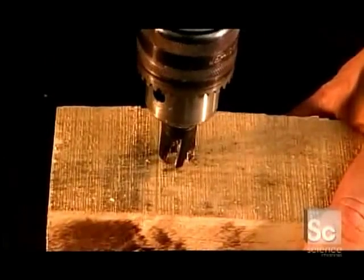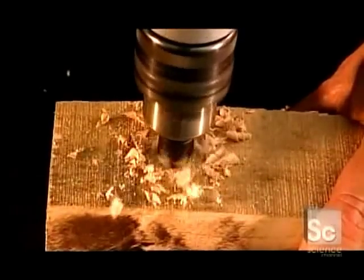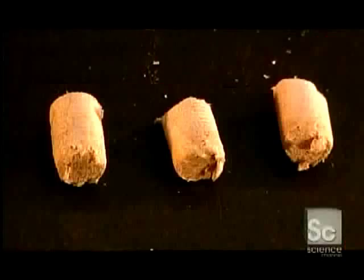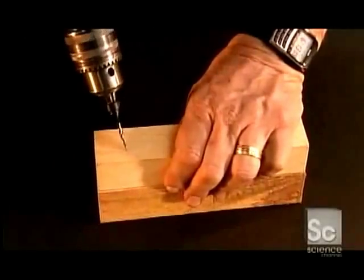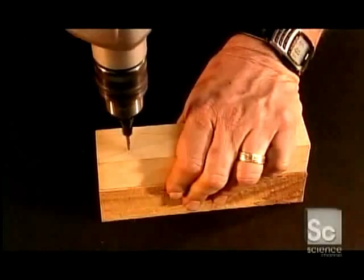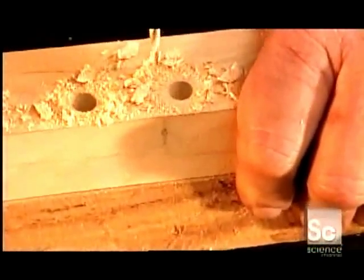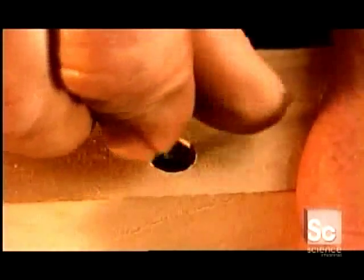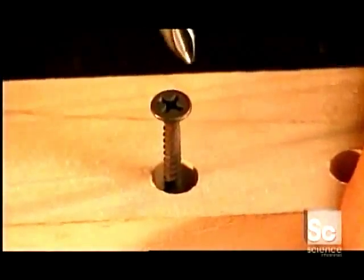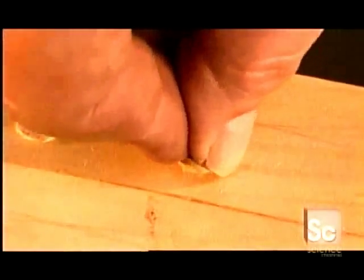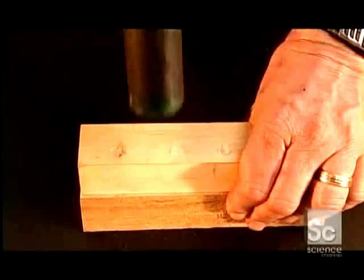So how do the three drill bits we've seen all work together? First, you use the plug cutter to make the plug. Then you pop out the plug with the screwdriver. Next, mounting the countersink, that black tool onto the taper point drill, you drill a hole for the screw. Then you drive the screw into the hole, sinking it below the surface. Then you cap the hole with the plug.